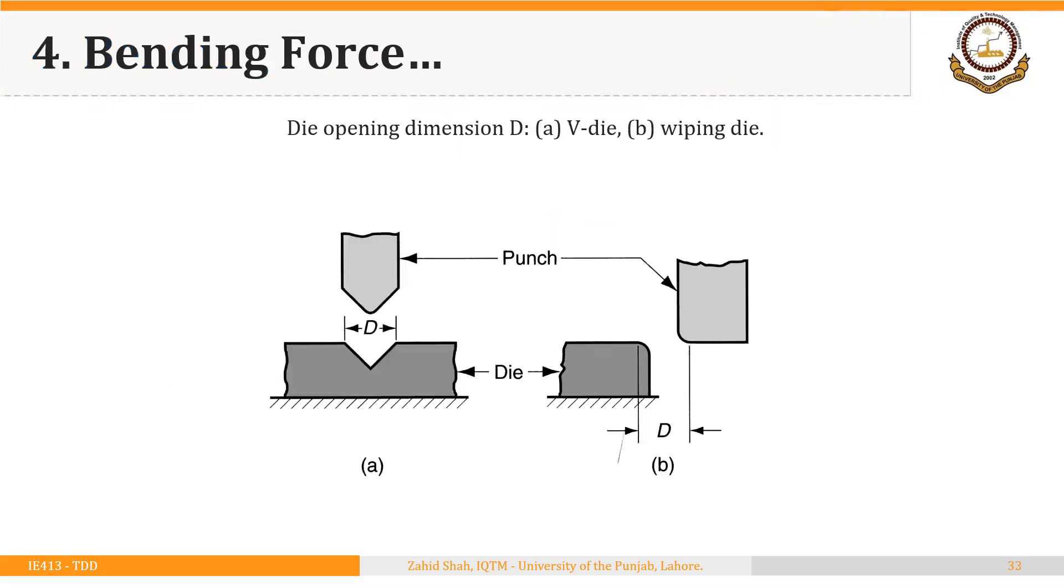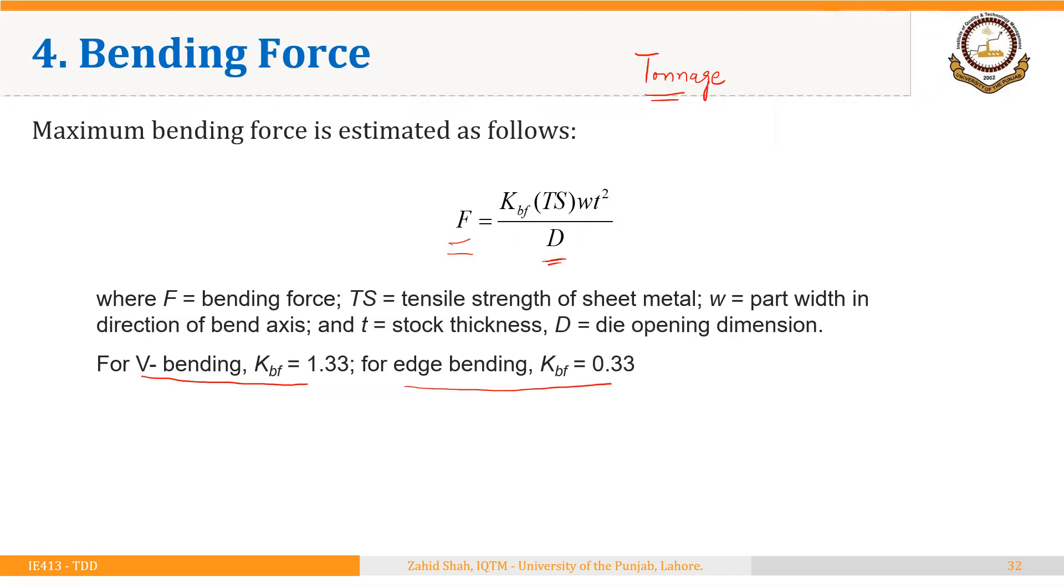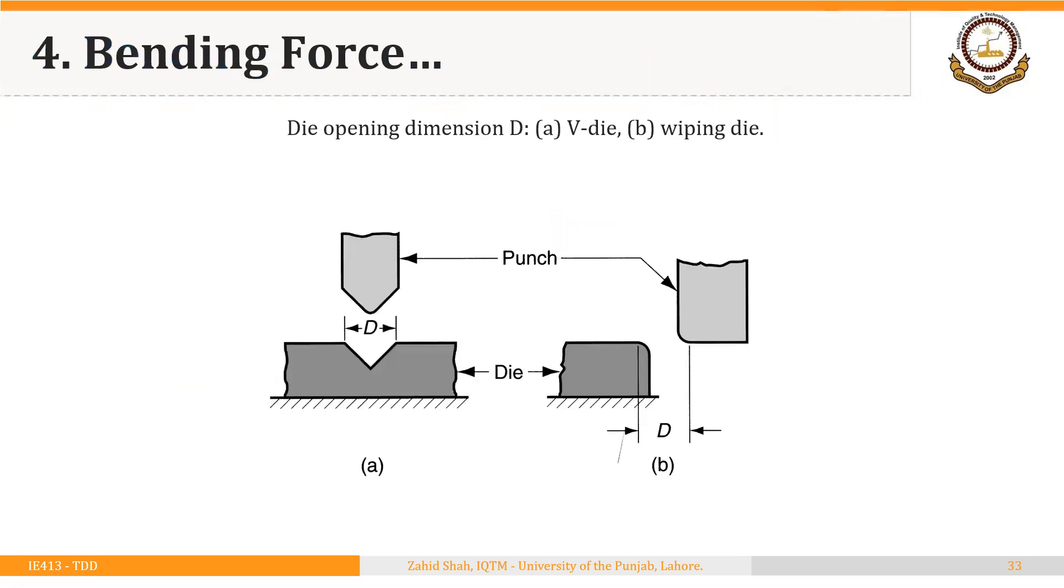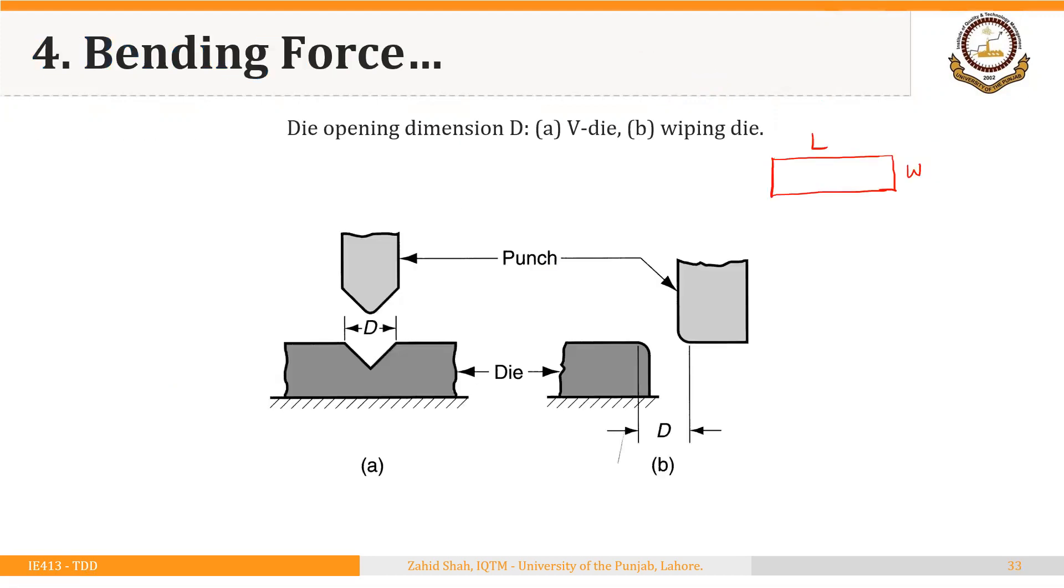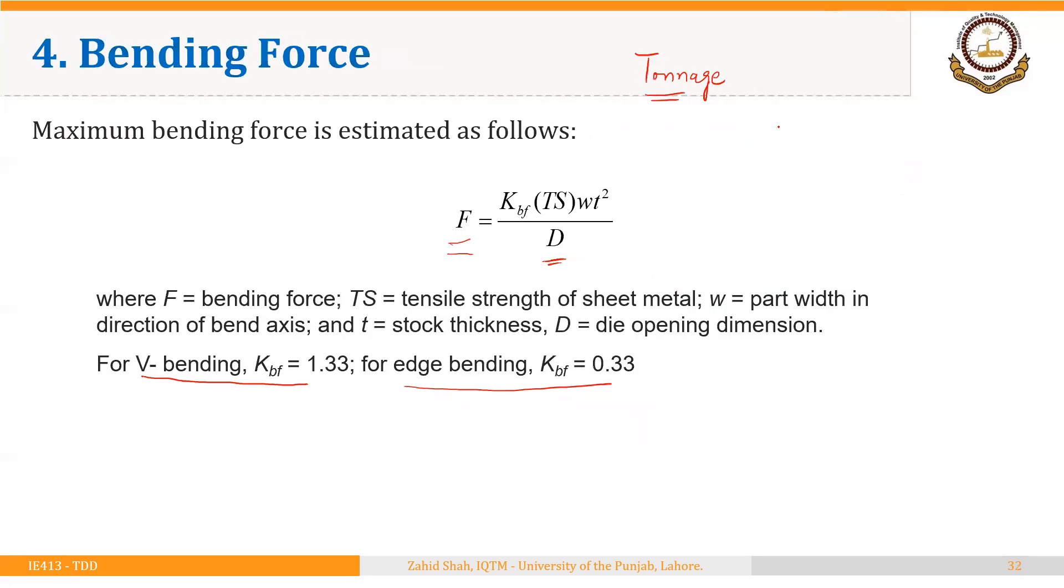So let's see first different variables that are in this equation. Width and thickness are very obvious. So we have a starting blank that has a certain length and width. So W is that width, t is the thickness of the blank.